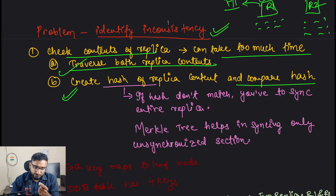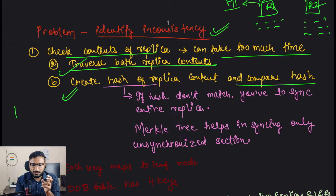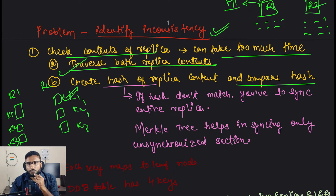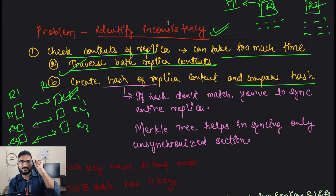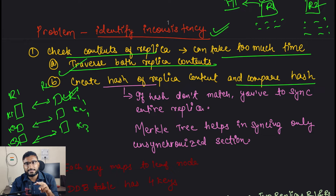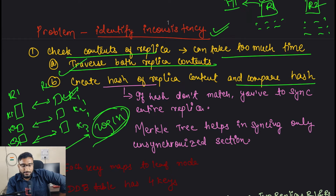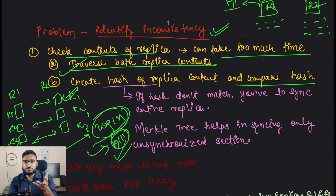What if you create hashes of the individual keys and compare them specifically? You have replica R1 with keys K1, K2, K3 and replica R2 with keys K1', K2', K3'. You need to compare them. You could compare one by one, but can you find a more efficient way? Just like with a sorted array you can use binary search instead of linear search to reduce time complexity to O(log n), or a hash table for O(1) lookup - can we do something similar?